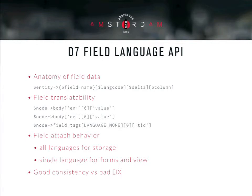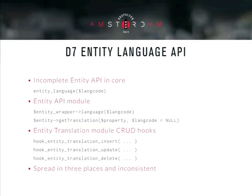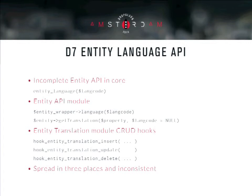You probably know what I'm talking about. Then we have the entity language API — in D7 heaven, or something like that. Actually, we have an incomplete entity API in core; most of it is in contrib. The small pieces we have in core include the entity language function, which has the role of returning the language of the entity.